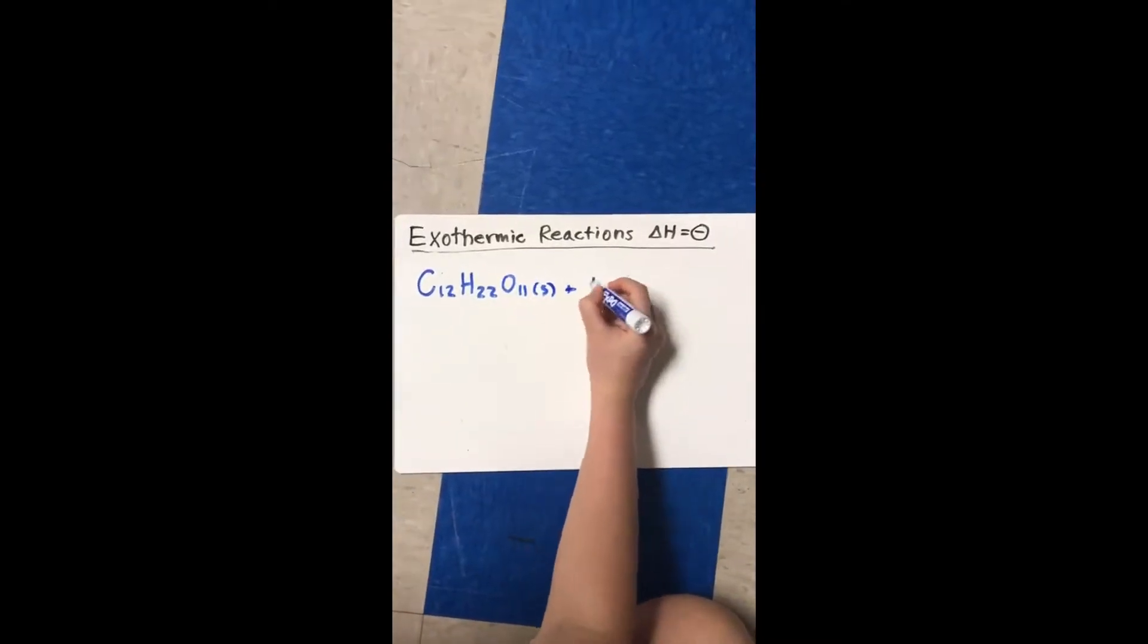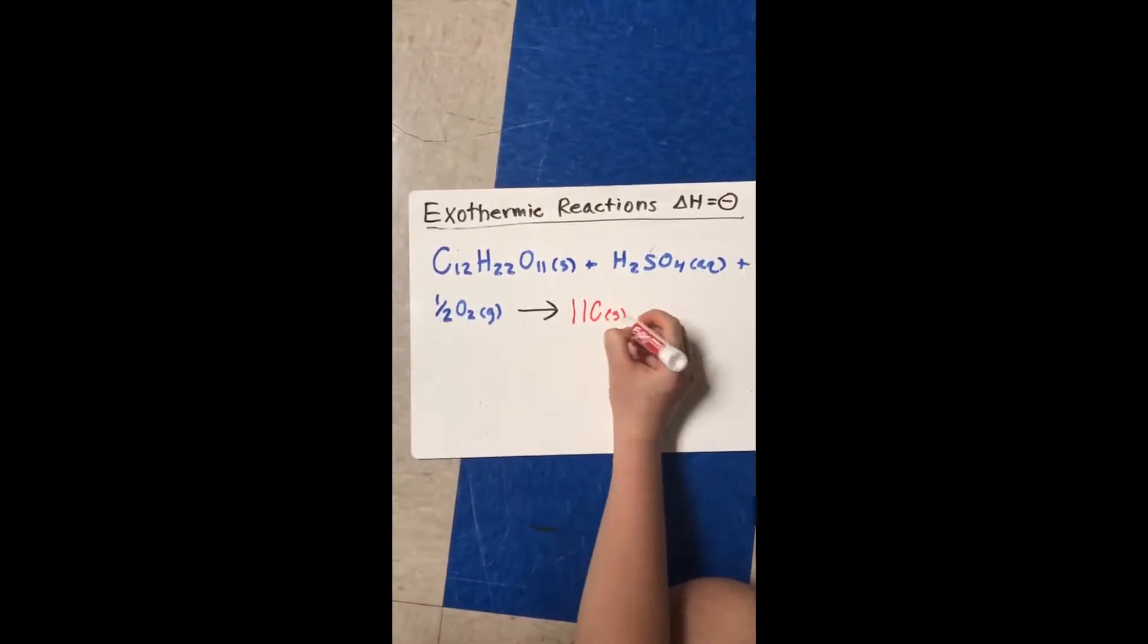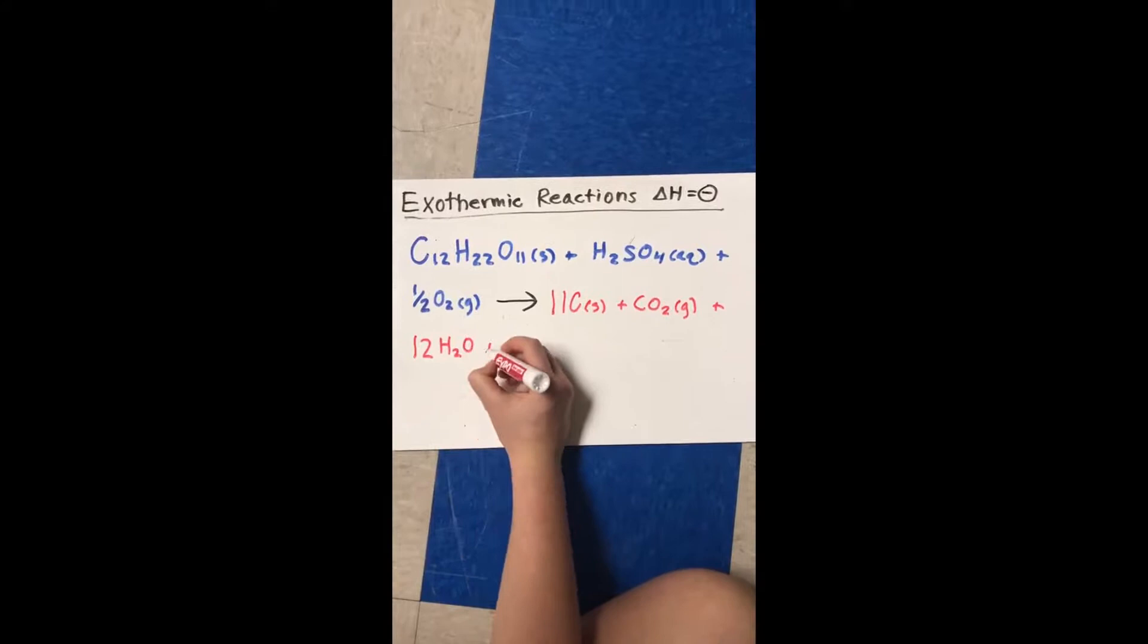In this experiment, we are going to mix sugar with sulfuric acid and oxygen that's in the air to produce carbon, carbon dioxide, water, sulfur dioxide, and heat.